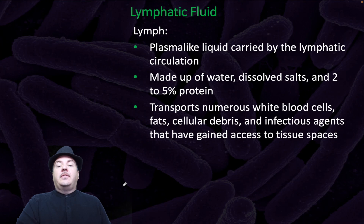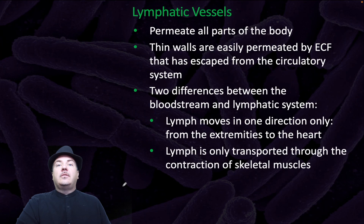Lymphatic fluid, or lymph, is a plasma-like liquid carried by the lymphatic circulation. It's made up of water, dissolved salts, and 2–5% protein. It transports numerous white blood cells, fats, cellular debris, and infectious agents that have gained access to tissue spaces. Lymphatic vessels permeate all parts of the body; the thin walls are easily permeated by extracellular fluid that has escaped from the circulatory system.